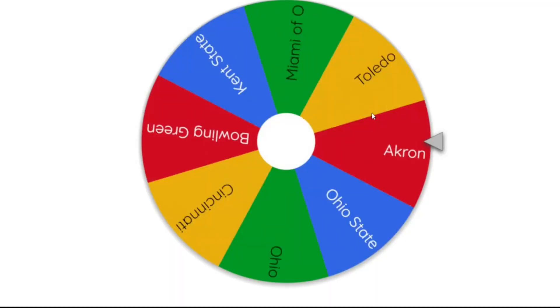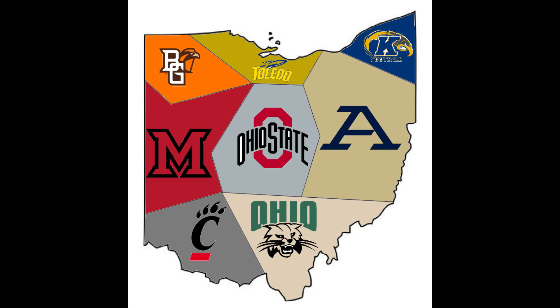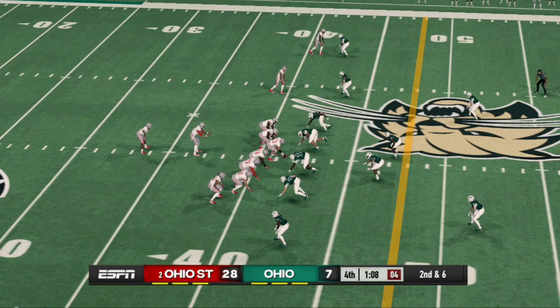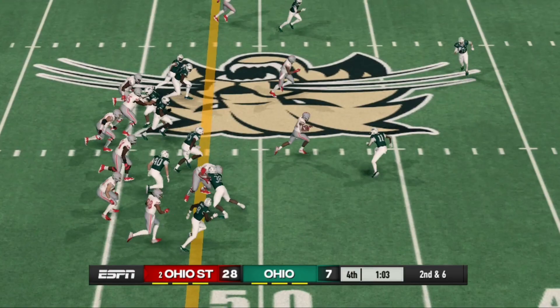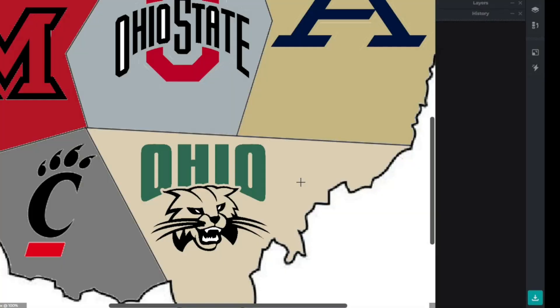Going into our first spin here for the Battle of Ohio, let's see which team we're going to start off with. It looks like it's going to be Ohio State, and they're going to be headed south, which means they're going into the University of Ohio. No shocker here — Ohio State is going to completely dominate Ohio, finishing it off with a huge run right up the gut, and they're going to take over that southern part of Ohio.